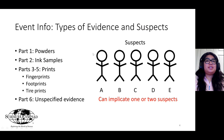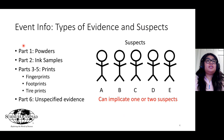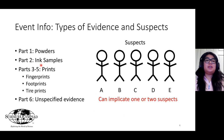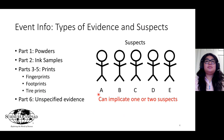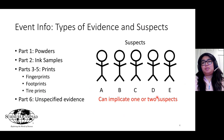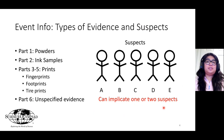There are six types of evidence that students will be given. Part 1 consists of powders. Part 2 consists of ink samples, which is where chromatography comes in. Parts 3 through 5 are different kinds of prints left at the scene — specifically fingerprints, footprints, and tire prints. Part 6 will be unspecified evidence. There will always be five suspects that students can choose from, and they can implicate either one or two suspects.